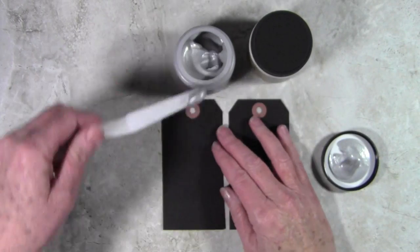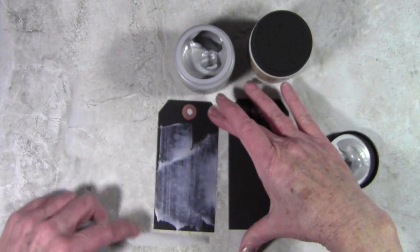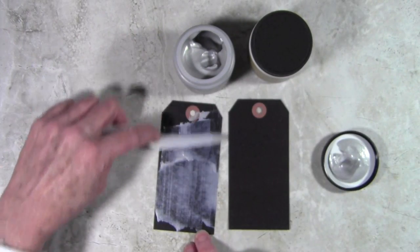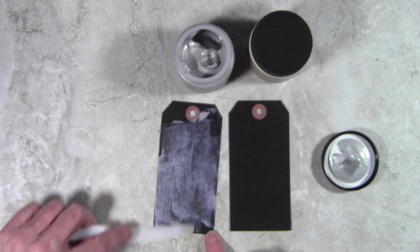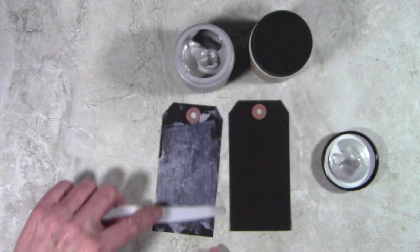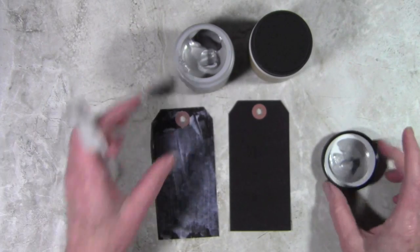So here I have some silver embossing paste and my craft knife, and I'll go ahead and spread a really thin layer onto my Ranger black tag. Wendy suggests using the crackle paste over the silver, the gold, or the black embossing paste, so I wanted to try one with the silver and then one by itself.